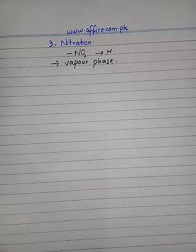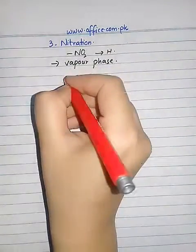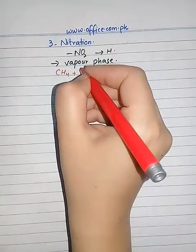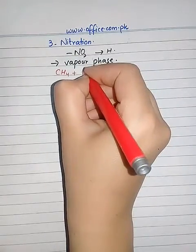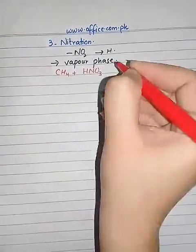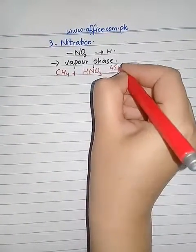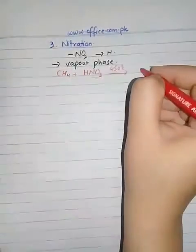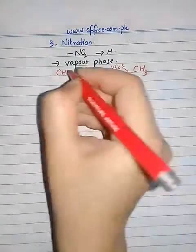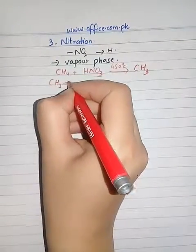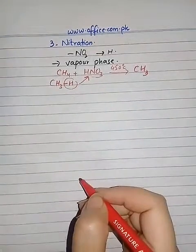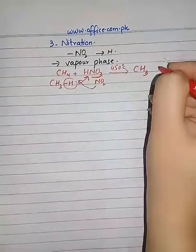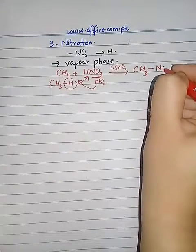Here we will write the equation: CH4 methane. Nitration is mostly carried out with the help of nitric acid HNO3. The temperature is very high, 450 degrees Celsius, almost 400 to 500 degrees. The nitro group NO2 will be added in place of one hydrogen. You will remove one hydrogen from methane, give this to the nitric acid, and take one NO2 and add it here. It will form CH3NO2.